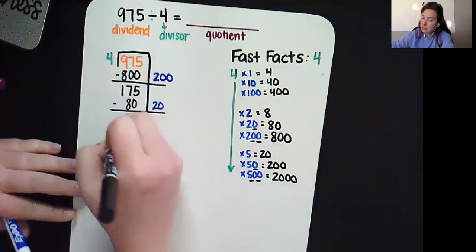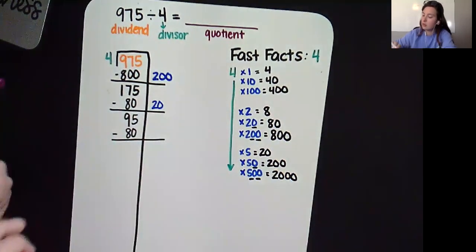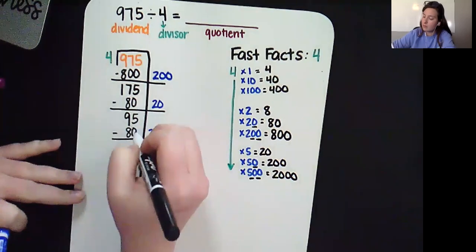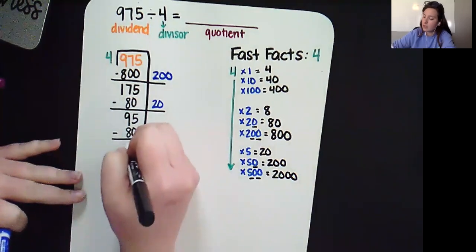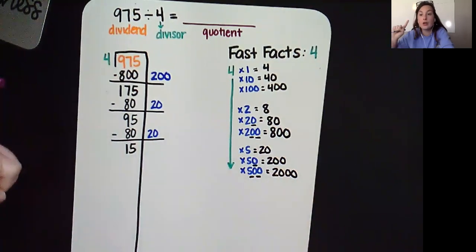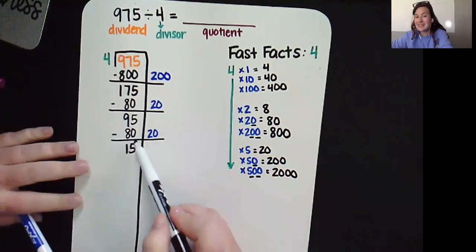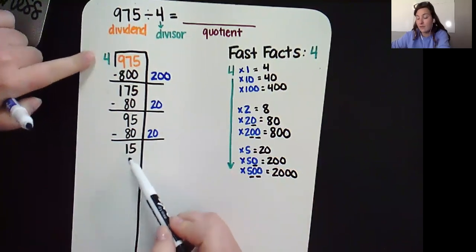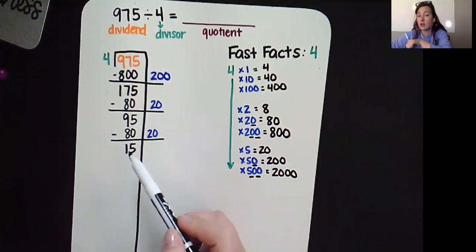Oh, it looks like I'm using 80 again. 5 minus 0 is 5, 9 minus 8 is 1. Again, you're probably like, Willis, do we just go forever and forever and forever? No, you don't. You stop when your target number is less than your divisor. 15 is not less than 4, so we're still going.